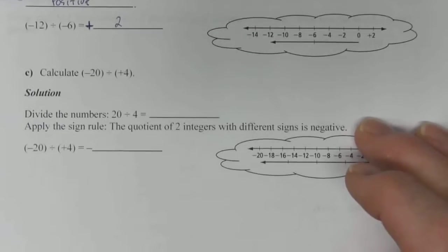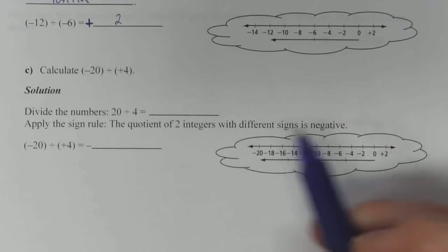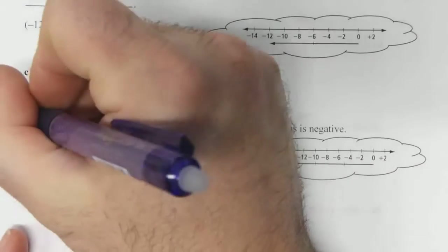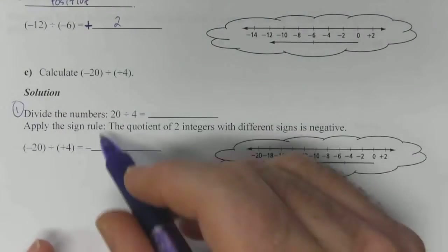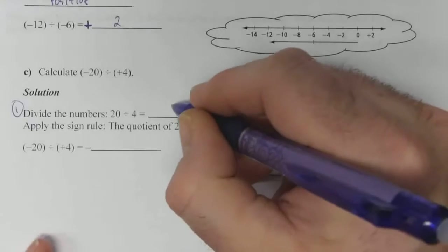Third example. Calculate negative 20 divided by positive 4. Again, step 1, divide the numbers. 20 divided by 4 we know is 5.